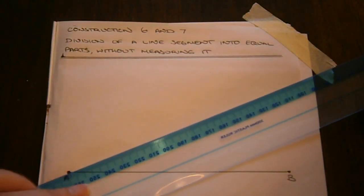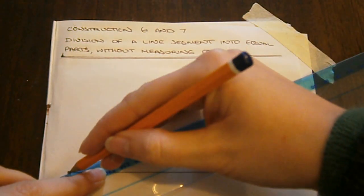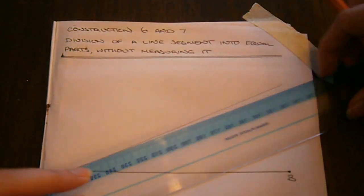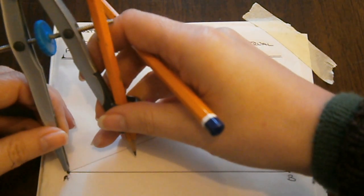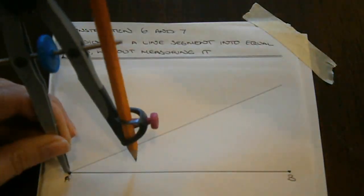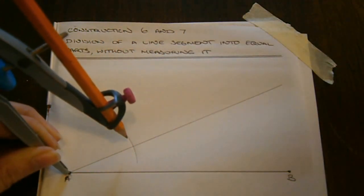So we draw a line through our point A at an acute angle to the line AB. We then take our compass, put the point on A, and swing an arc so that the arc intersects with this line that we originally drew.